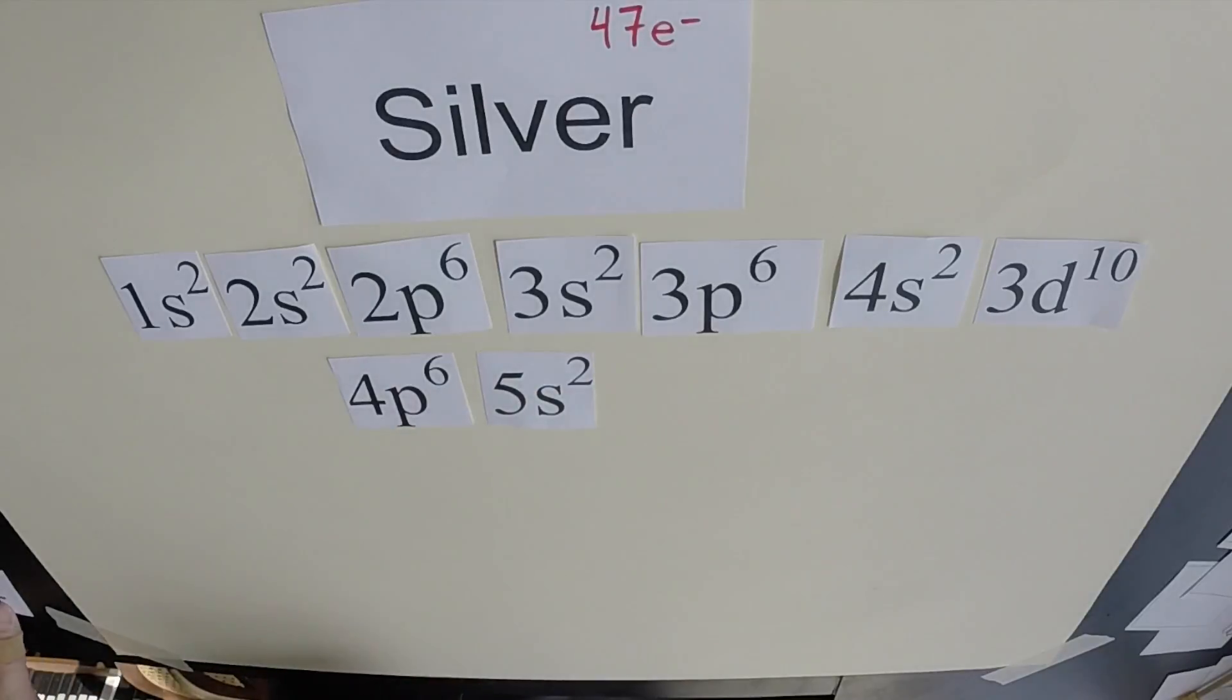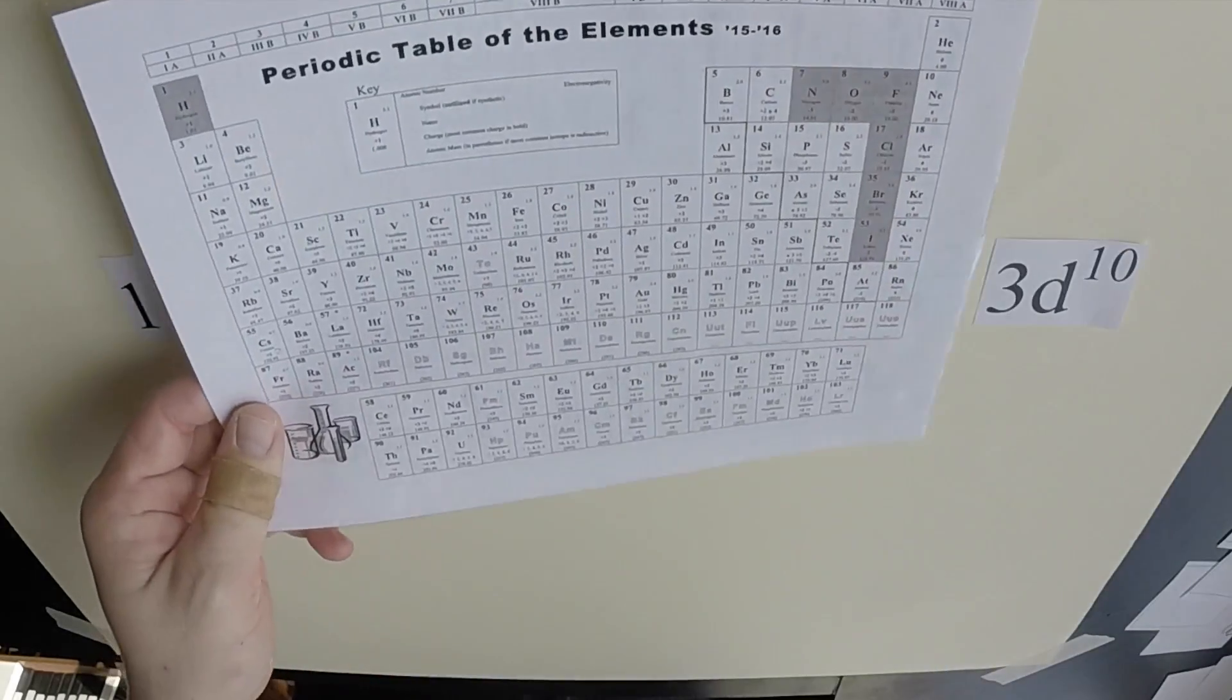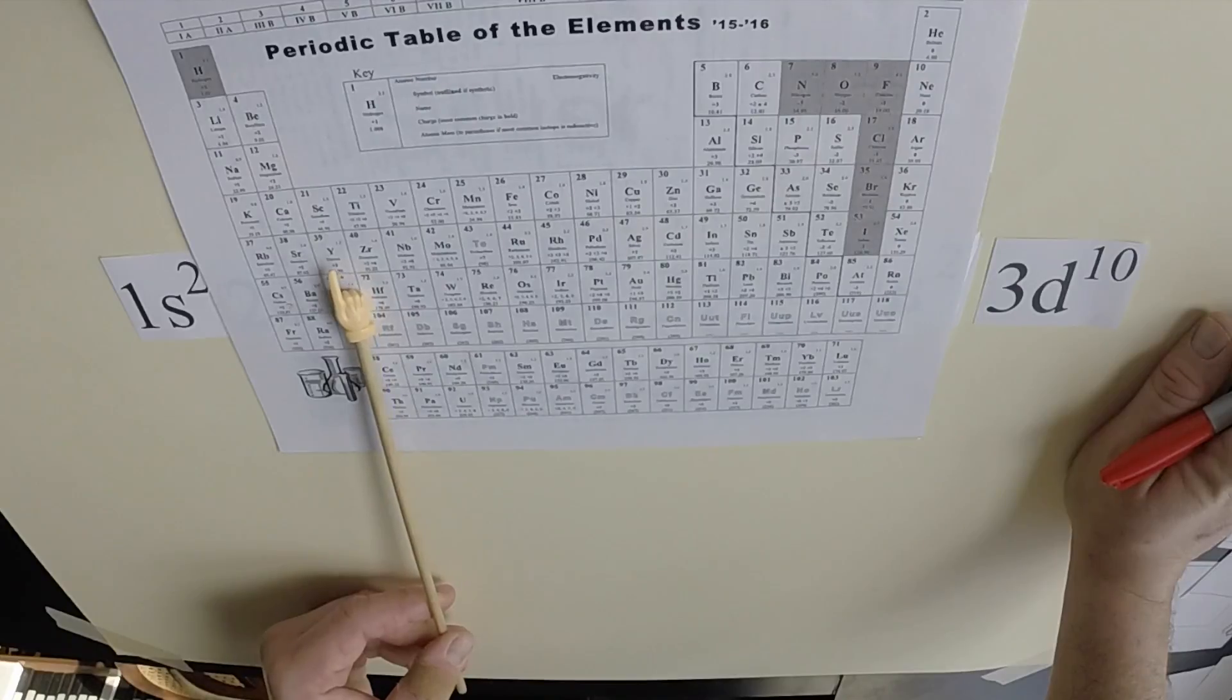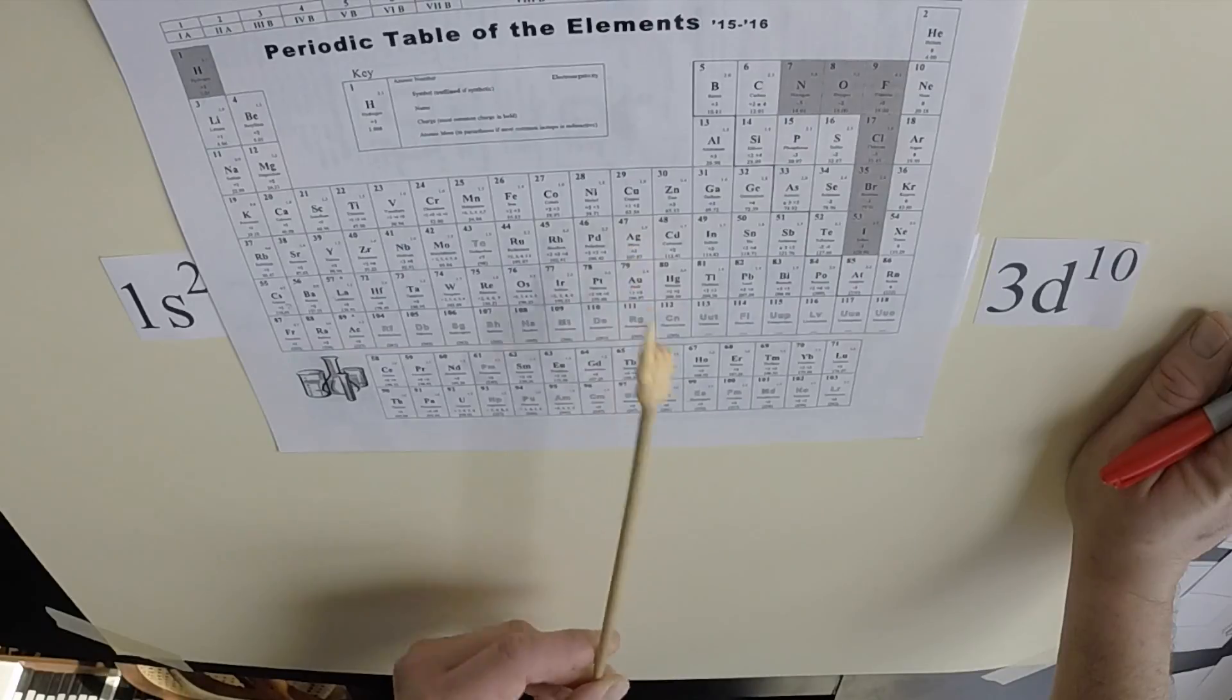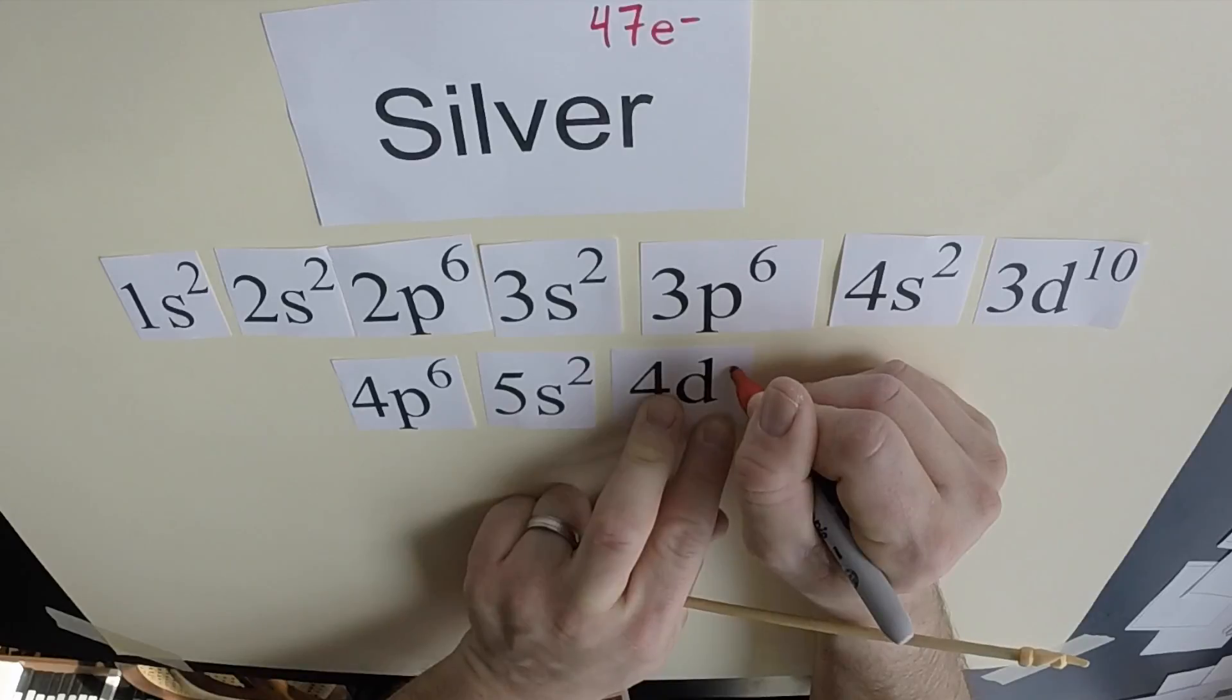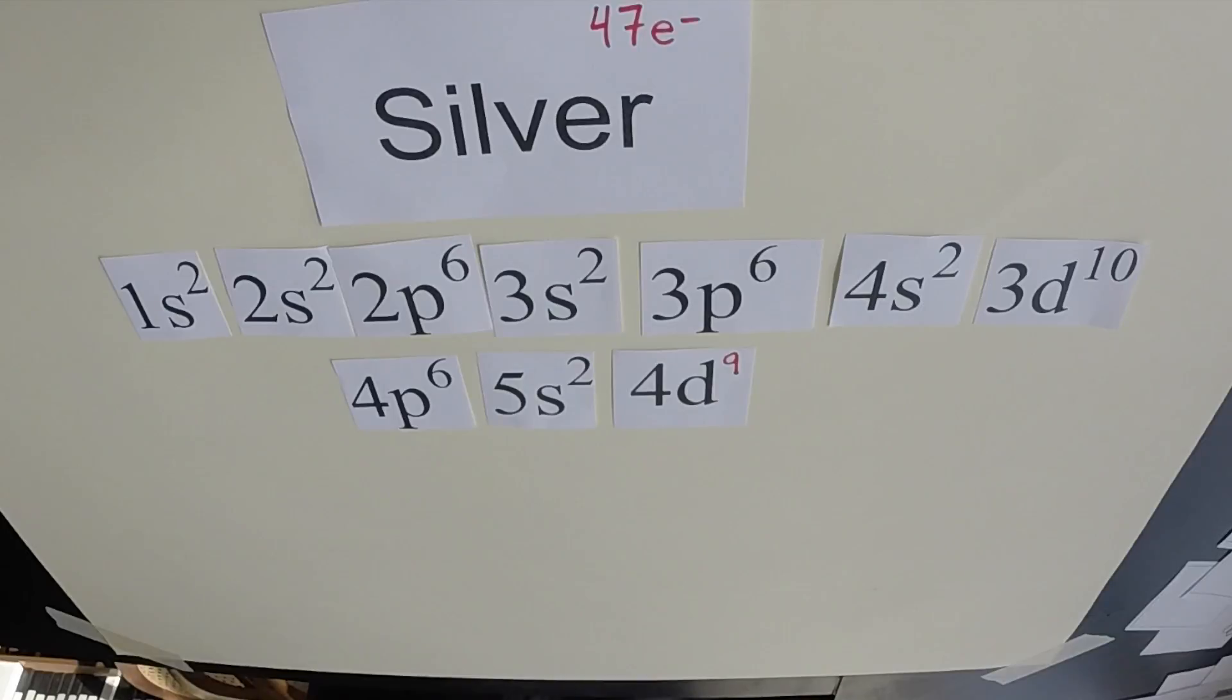5s2, and then finally 4d. Now, if we look at the periodic table, let's look in the d block. What you can do is you can count over the number of places that silver is in the d block: 1, 2, 3, 4, 5, 6, 7, 8, 9. That's how many electrons silver has in that final energy level and sub-level. So 4d9 would be the final piece of silver's electron configuration.